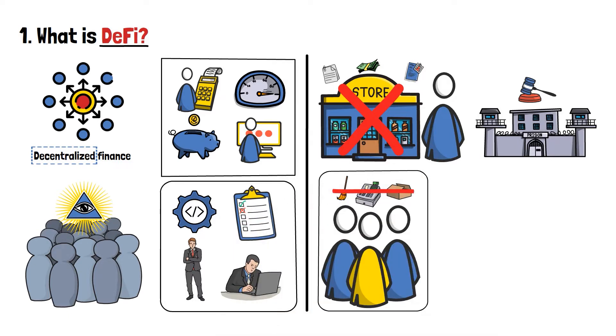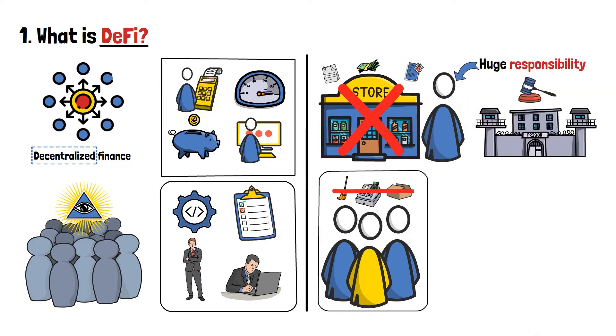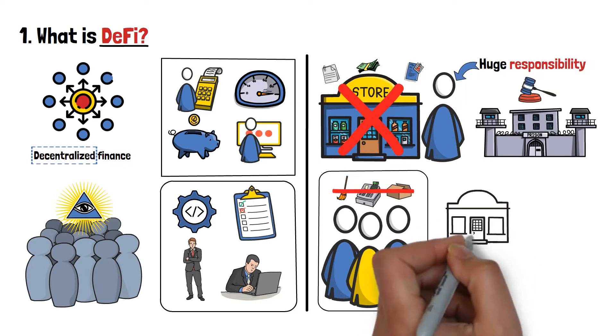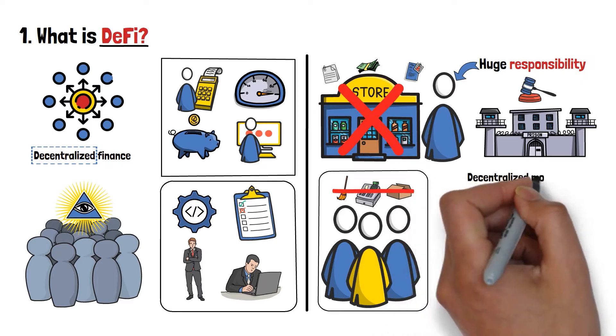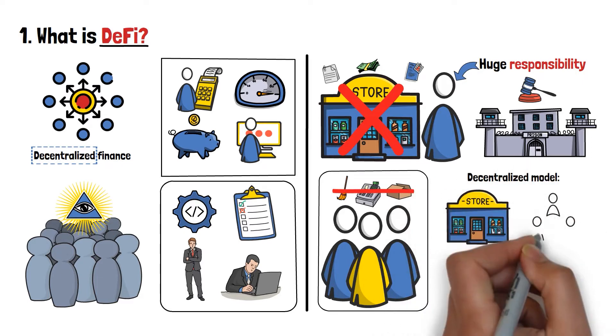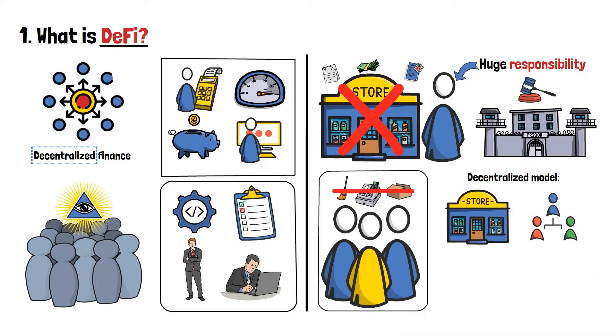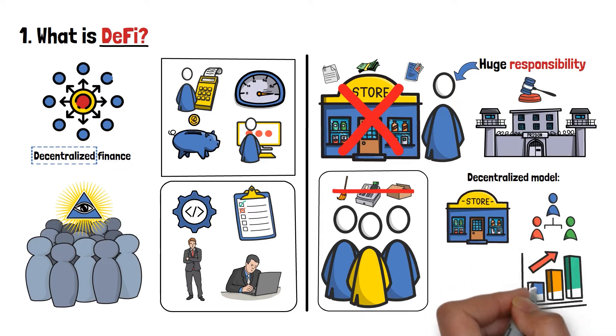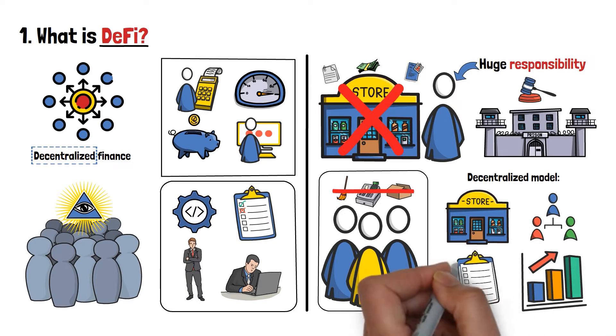In other words, this places a huge responsibility on a single individual, or a couple of people. If the same store was governed via a decentralized model, there would be no single store owner. Instead, all of the employees would be responsible for the well-being of the establishment, and would make decisions by voting on proposals.